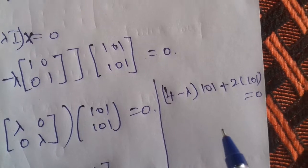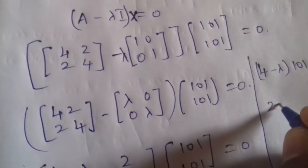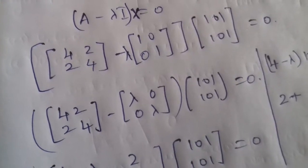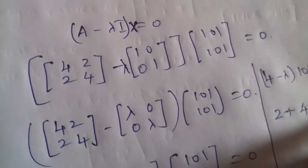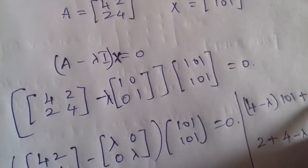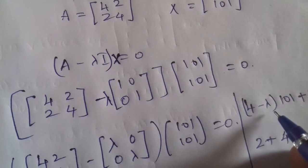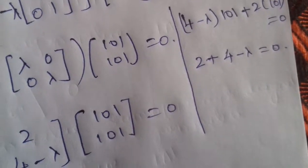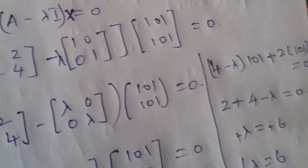So (4 minus lambda) times 1 plus 2 times 1 equals 0, which gives 4 minus lambda plus 2 equals 0, and similarly 2 plus (4 minus lambda) equals 0. Solving: minus lambda equals minus 6, therefore lambda equals 6.